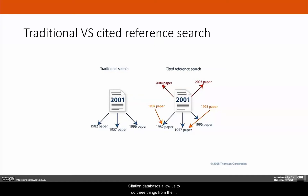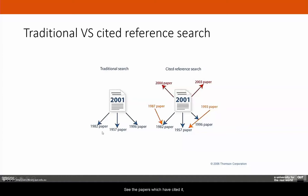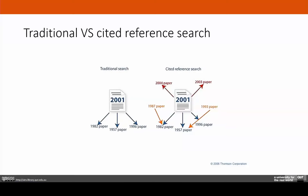Citation databases allow us to do three things from the parent record — for example, the 2001 record. First, see the papers which have cited it (times cited or cited by). Second, see the papers which have cited the same records or references — the related records.